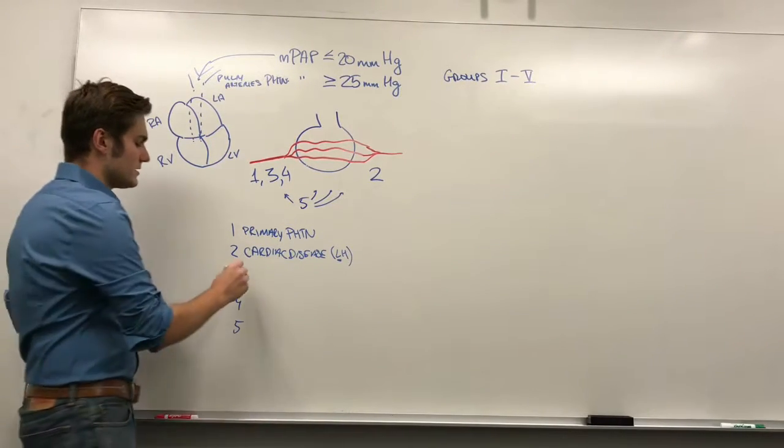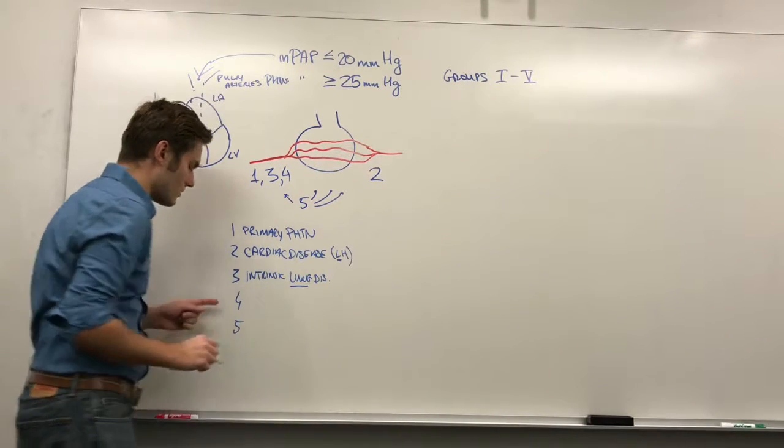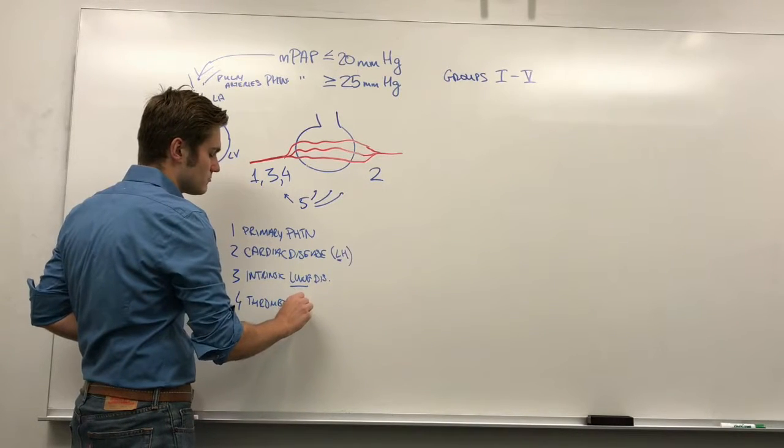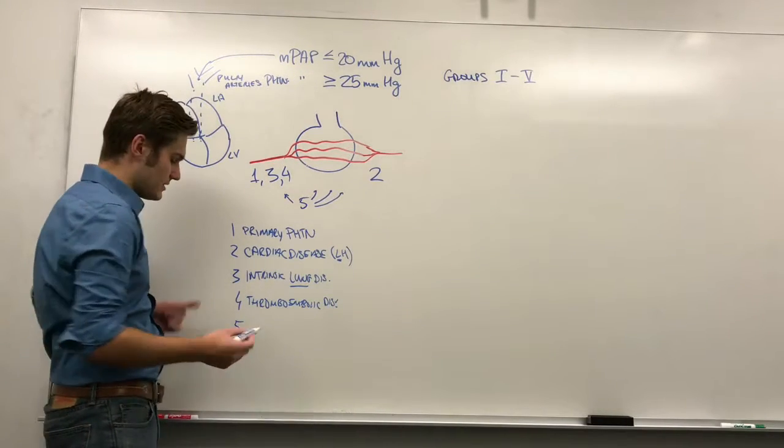Third is going to be everything that's due to intrinsic lung disease. Four is going to be from thromboembolic disease. And five is everything else. That's kind of the grab-bag catch-all one that no one really is sure of where it fits into.